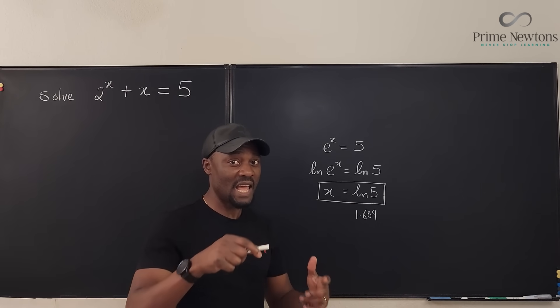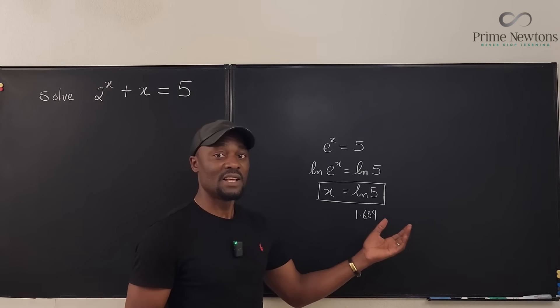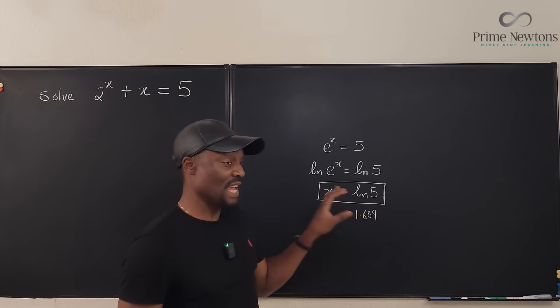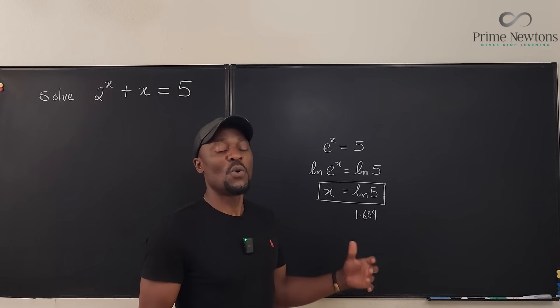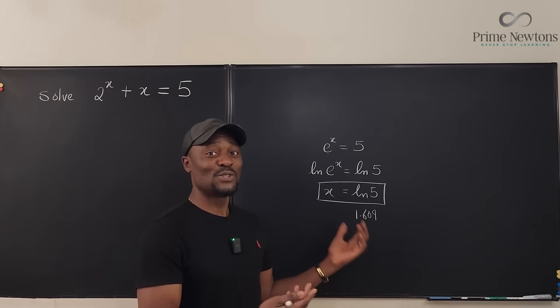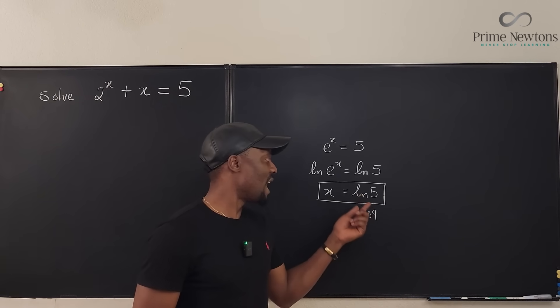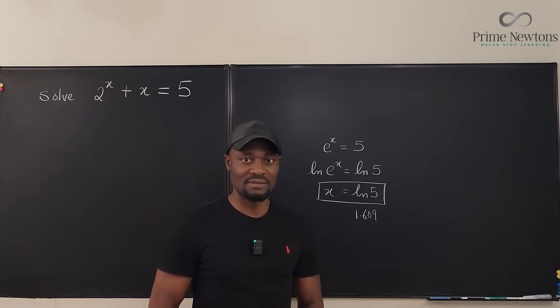But you're okay with writing the answer as the argument of a function, because this is going to be a number. Remember, the function I'm about to introduce to you is going to behave like this also. It's not going to be ln. It's just going to be a W with a bunch of stuff inside.